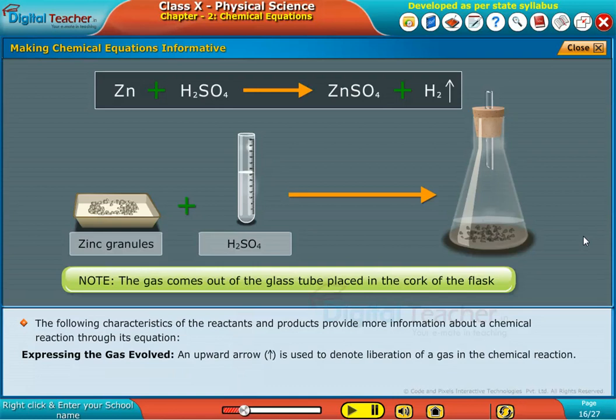Expressing the gas evolved. An upward arrow is used to denote liberation of a gas in the chemical reaction. The example is provided on the screen.